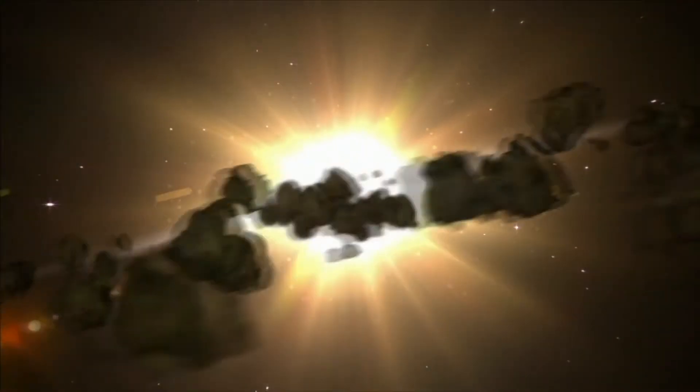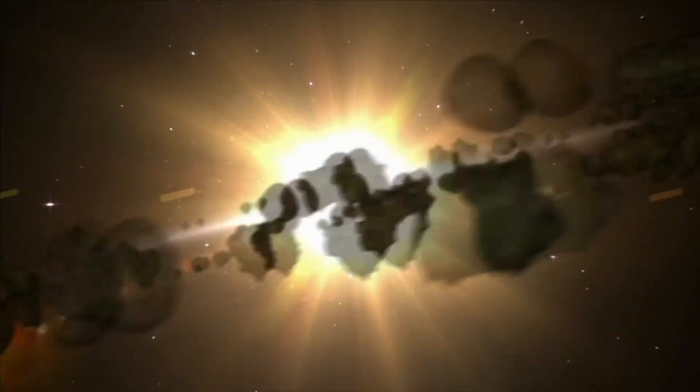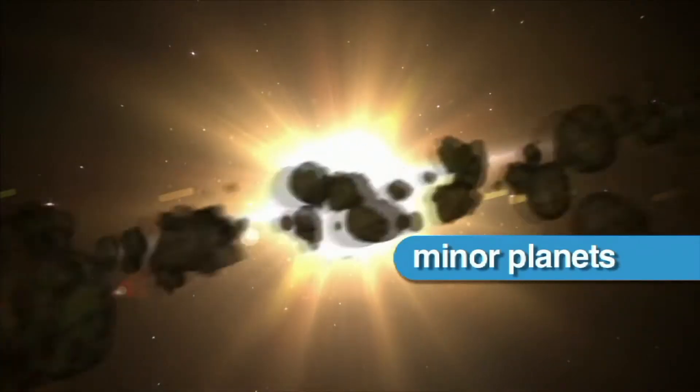Although asteroids orbiting the sun can be very big, and even have their own moons, they are too small to be considered planets. They are often called minor planets.